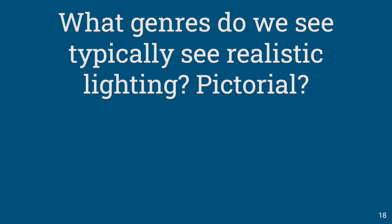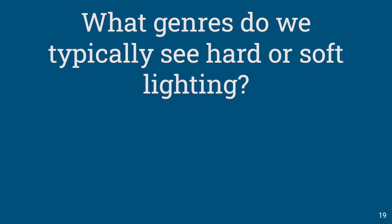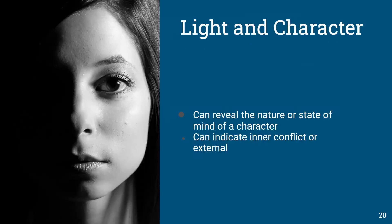What types of genres do we typically see these in? Well, most of them have all of them, but specifically: hard lighting with high contrast shadows — certainly horror films, which have very hard, very dark shadows throughout. Soft lighting we see more in comedies and romance — it just adds to the overall softness of what's going on. Light and character can reveal the nature or state of mind of a character; it can indicate inner or external conflict.